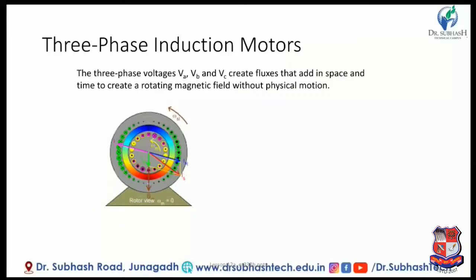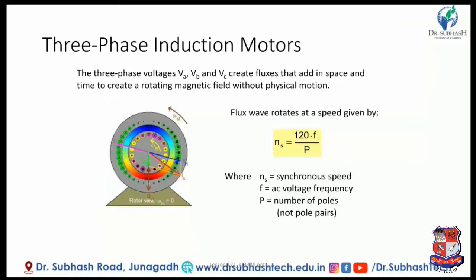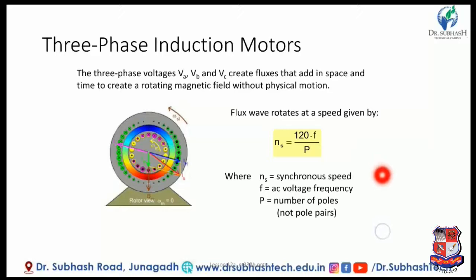The three-phase induction motor voltages VA, VB, and VC create a rotating magnetic flux. This flux is created in space over time to produce a rotating magnetic field. The rotating magnetic field is created without physical motion. The flux wave rotates at synchronous speed, given by: Ns = 120F / P, where Ns is the synchronous speed, F is the frequency, and P is the number of poles.